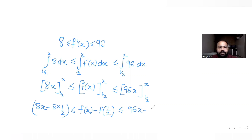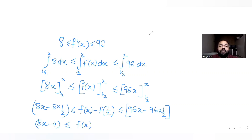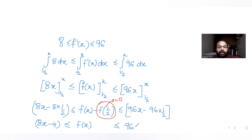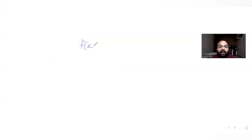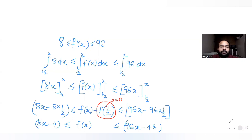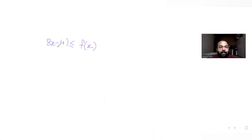Since f(1/2) = 0, the inequality becomes: 8x − 4 ≤ f(x) ≤ 96x − 48. So now I have the bounds on f(x): it is greater than or equal to 8x − 4 and less than or equal to 96x − 48.